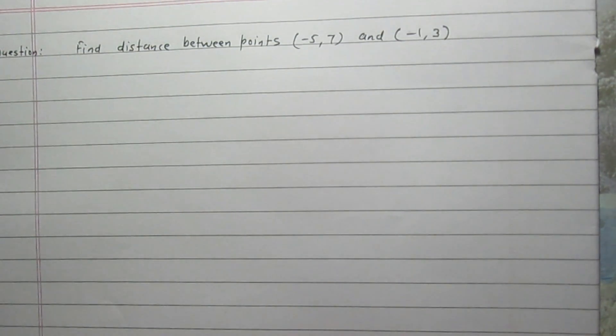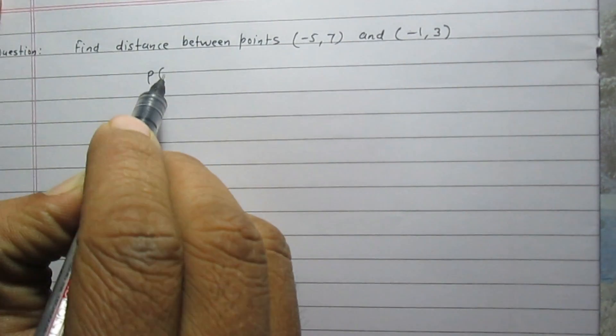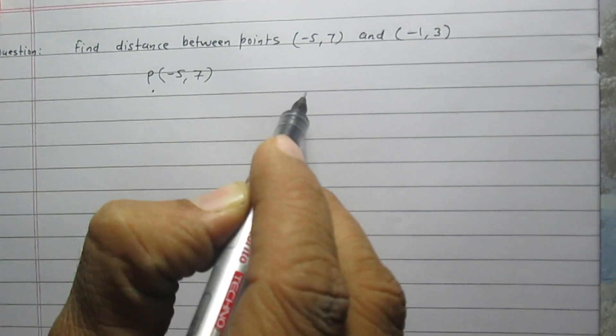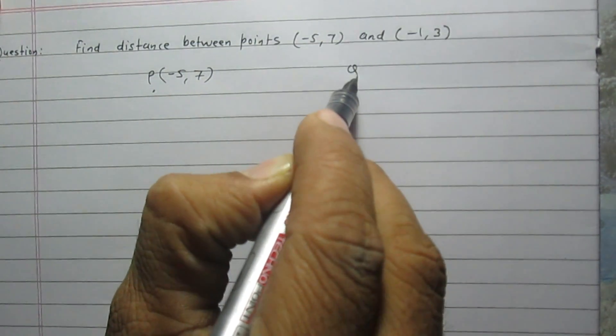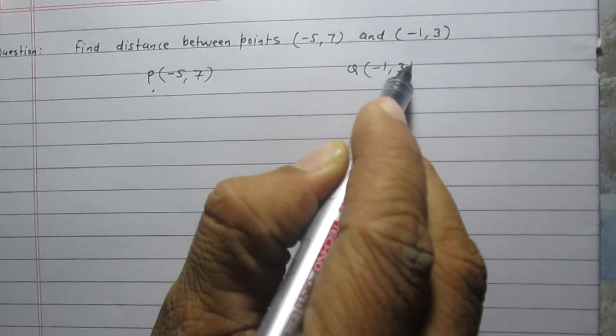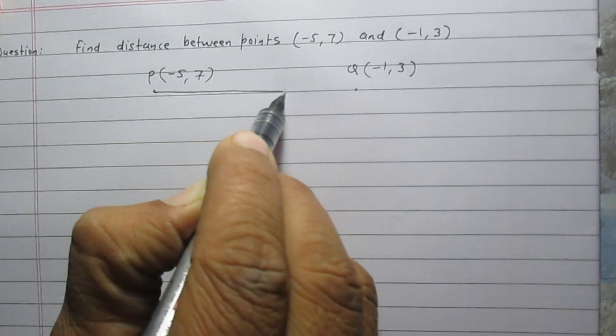Let us consider the first given point is point P and its coordinates are (-5, 7). The second point is Q and its coordinates are (-1, 3), and we are to find distance PQ.